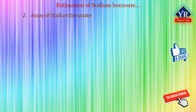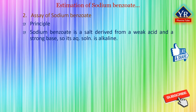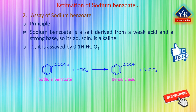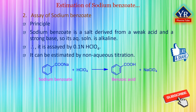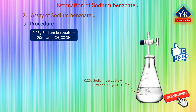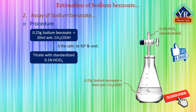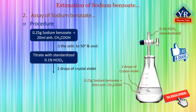Assay or percentage purity determination of sodium benzoate. Sodium benzoate is a salt derived from a weak acid and a strong base, so its aqueous solution is alkaline. Therefore, solutions containing sodium benzoate are assayed by 0.1 normal perchloric acid solution in an acid-base non-aqueous titration. Sodium benzoate can be estimated by the non-aqueous titration method in which it is dissolved in anhydrous glacial acetic acid, which increases the basic strength of sodium benzoate. Accurately weigh about 0.25 grams of sodium benzoate, dissolve in 20 ml of anhydrous glacial acetic acid, heat the solution to 50 degrees if necessary, and cool. Titrate with 0.1 normal standardized perchloric acid using 0.05 ml (about 2 drops) of crystal violet or 1-napthol benzene solution as indicator.